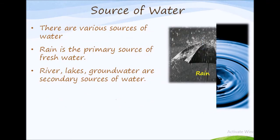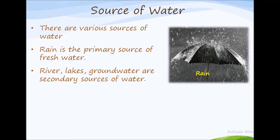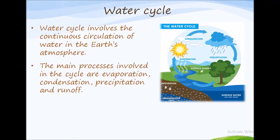Now, where does the water come from? What are its sources? There are various sources of water and rain is the primary source of fresh water. Rivers, lakes, and groundwater are secondary sources of water. As we know, rain is the primary source — let's see how rain occurs. For this, we need to know what the water cycle is. The water cycle involves the continuous circulation of water in the earth's atmosphere. The main processes involved in the cycle are evaporation, condensation, precipitation, and runoff.